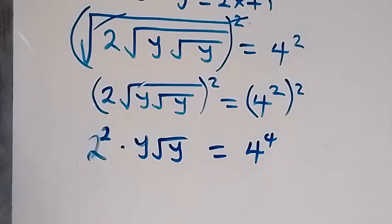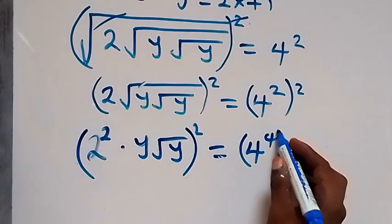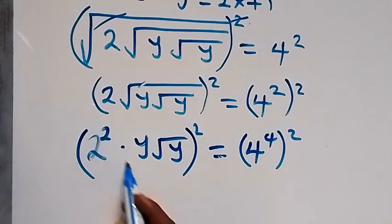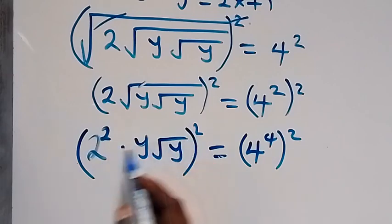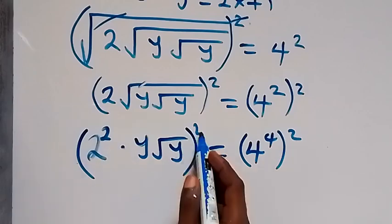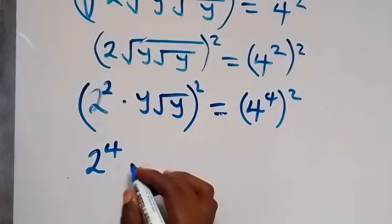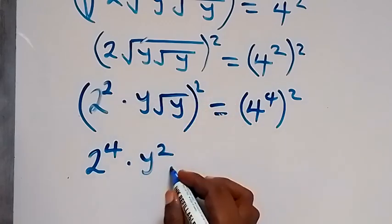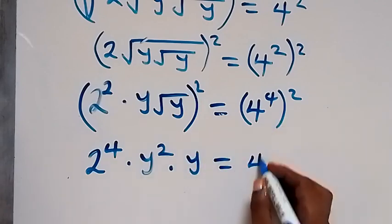We repeat the process and square both sides again. This square will affect 2², y, and square root of y. When we square 2², the power multiplies, giving us 2 raised to power 4. Then y times y squared gives y³ terms, and the square cancels the square root of y, leaving times y, which is equal to 4 raised to power 8.